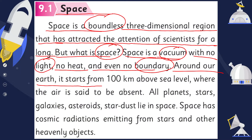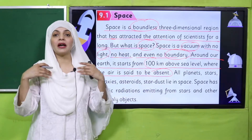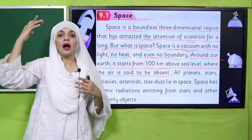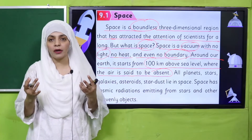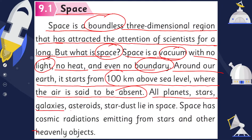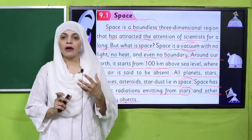Around our Earth, space starts from one hundred kilometers above sea level, where the air is said to be absent. So counting from sea level, one hundred kilometers outside the Earth is where space begins — there is no air there. All planets, stars, galaxies, asteroids, and stardust lie in space.